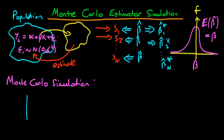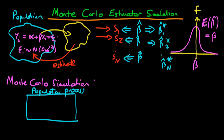The idea with Monte Carlo simulation is that you have some predefined population process which you yourself specify. So there is a population process, say yi equals alpha plus beta xi plus some error epsilon i, where epsilon i is normally distributed with a mean of zero and a variance of sigma squared. The difference here is that we actually specify the parameters alpha and beta, and also specify the exact distribution of the errors epsilon i. So we already know what values we would like our estimator to output.